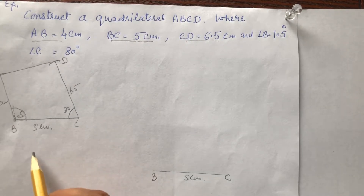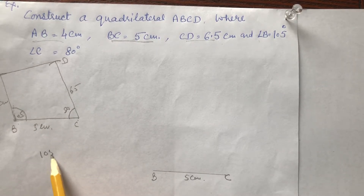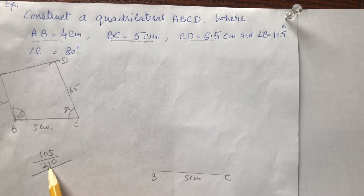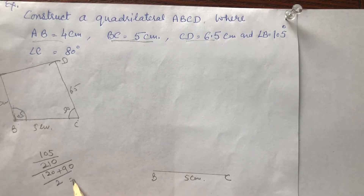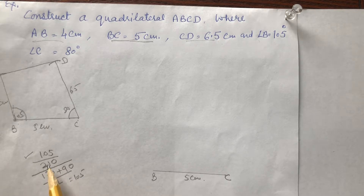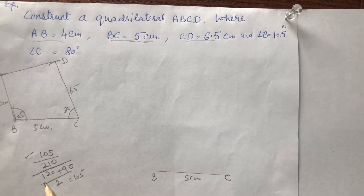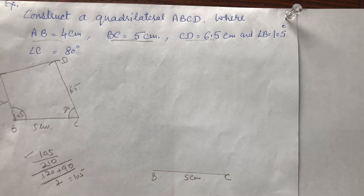As I told you in the last video, angles which are divisible by 15 will be made by compass. 105 is divisible by 15, so we will make it with compass. How to make 105: double it — 210. Divide 210 into two parts: 120 plus 90. The midpoint of these two angles gives 105 degrees.